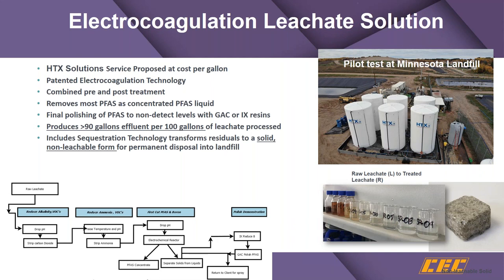Electrocoagulation is a process that can help remove and destroy PFAS constituents. It requires a lot of pretreatment because without it there's going to be a lot of foaming — alkalinity has to be removed either biologically or stripped out. The residual is a smaller amount. One company we've been speaking with is HTX down in Texas; they have a patented technology and approach this as a service, charging a cents-per-gallon fee with very little initial capital expenditure.